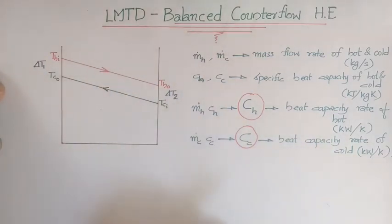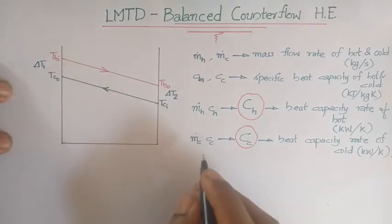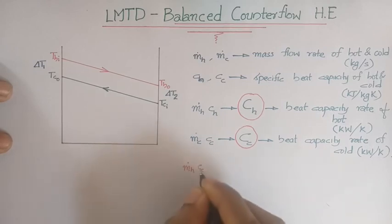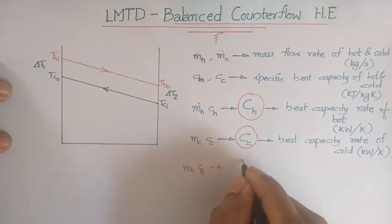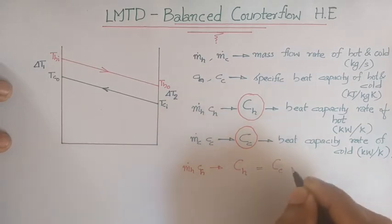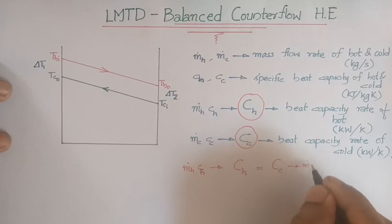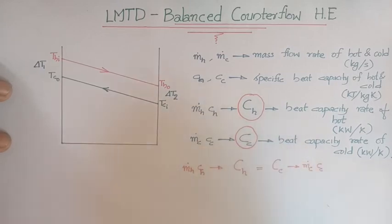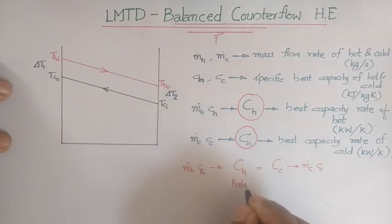Based on this, we will see what is meant by a balanced counter flow heat exchanger. If in a counter flow heat exchanger the heat capacity rate of the hot fluid C_H equals the heat capacity rate of the cold fluid C_C, such a heat exchanger is called a balanced heat exchanger.